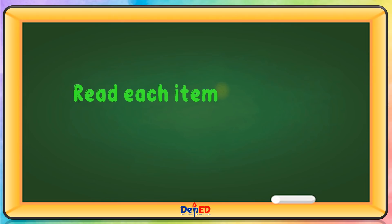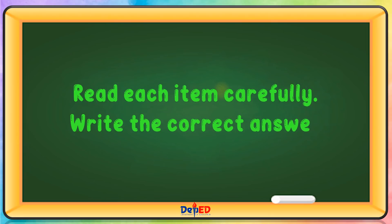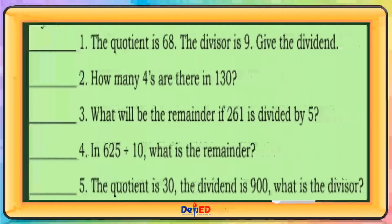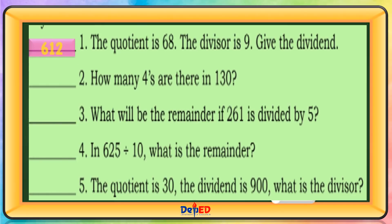Read each item carefully. Write the correct answer. The quotient is 68, the divisor is 9. Give the dividend. The answer is 612.